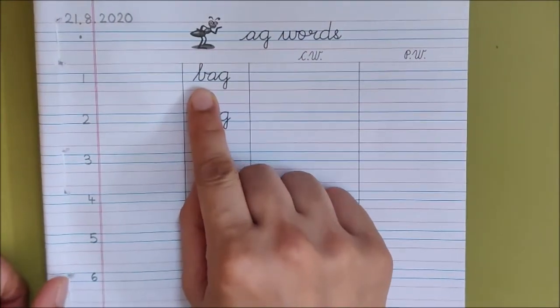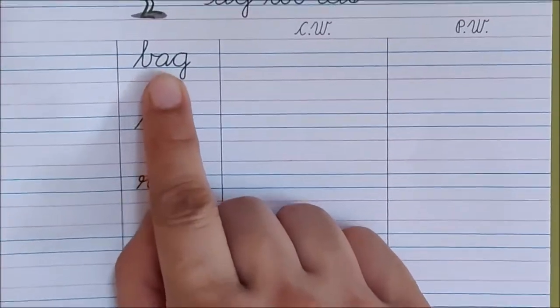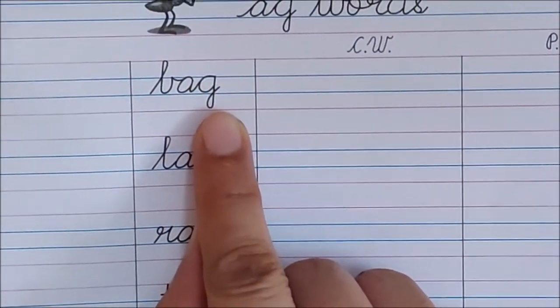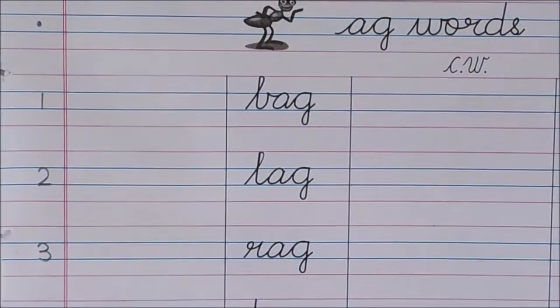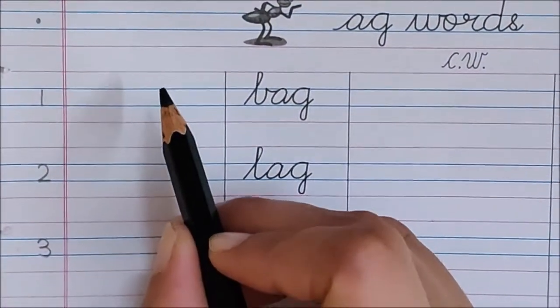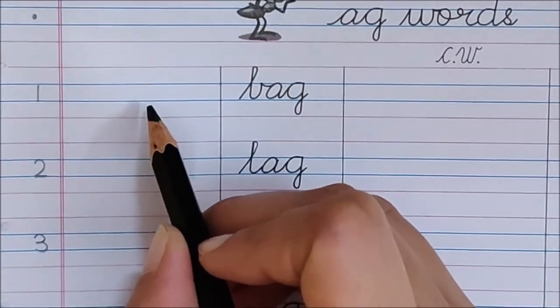Now children, let us read the first word. Read with me children. B, A, G, Bag. So children, here with your black color pencil, draw bag with me. You can draw with your writing pencil also.